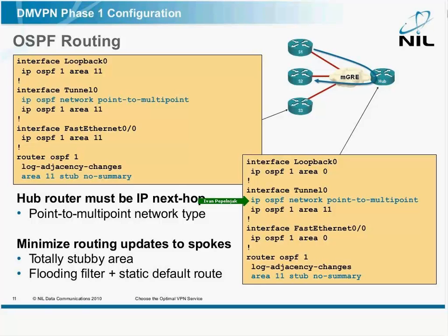On the spoke routers, you should also do that. Not that it would matter, but the point-to-multipoint network type has different default timer values than the point-to-point network type. So if you configure IP OSPF network point-to-multipoint on the hub, it's a good idea to configure the same thing on the spoke, just to make sure that timers always match.